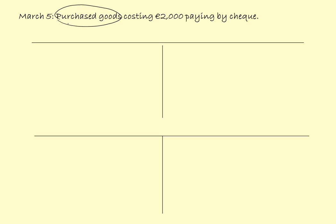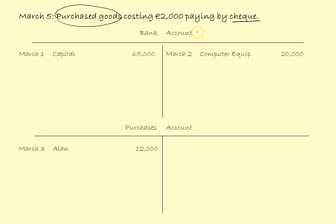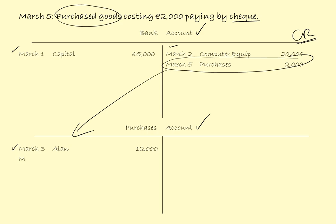March the 5th: purchased goods costing 2,000 paying by cheque. Purchased goods goes to the purchases account, and paying by cheque implies the bank. We already have both of those accounts. Money coming out of the bank — we're going to credit the bank account: March the 5th, Purchases, 2,000. And we will be debiting the purchase account: March the 5th, cross reference to bank, 2,000.